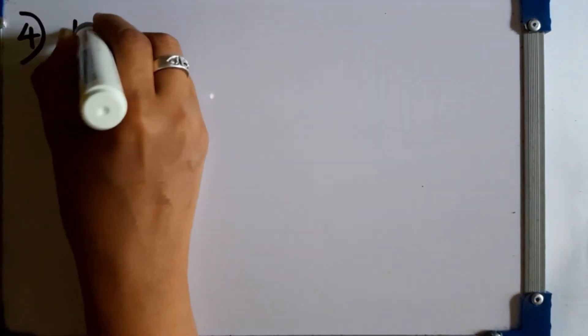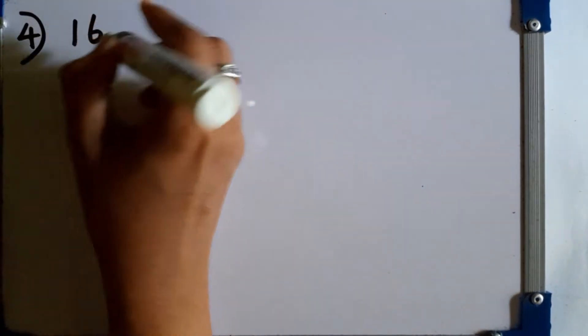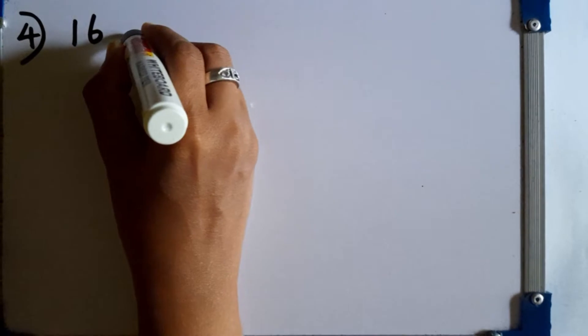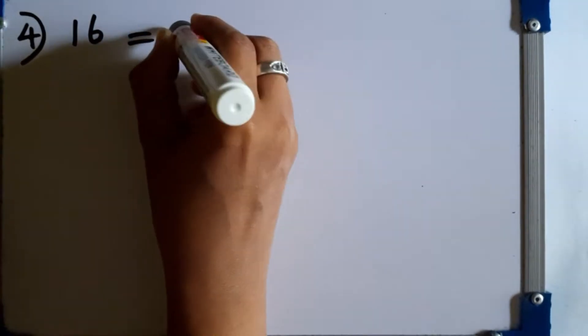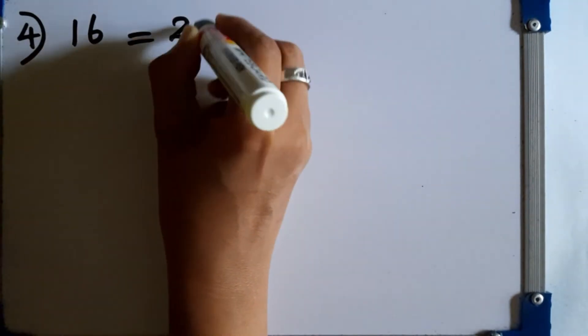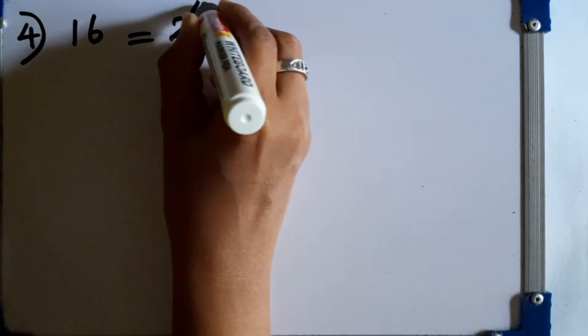Question number 4. Write down 16 as a power of 2. We can write 16 as 2 to the power of 4.